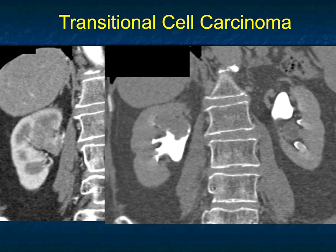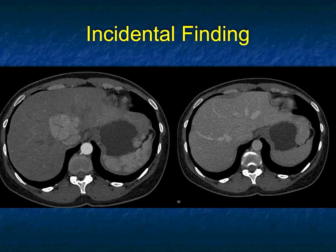Next: an incidental finding. On arterial and venous phase imaging you see an approximately 5-millimeter vascular mass in the right lobe of the liver, and then on the venous phase it's gone — you can see where it was by the hepatic veins. What becomes isodense? If you wait long enough, everything in the liver becomes isodense: hepatomas, vascular metastases, hepatic adenomas, AV malformations, hemangiomas, and focal nodular hyperplasia.